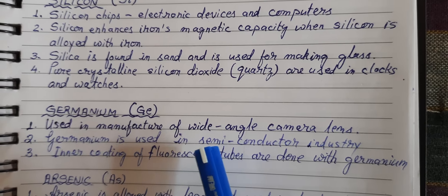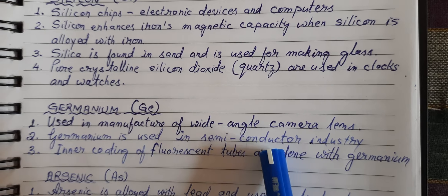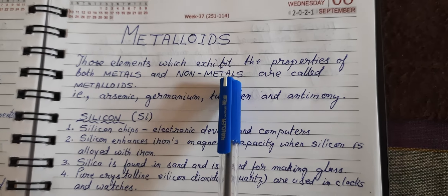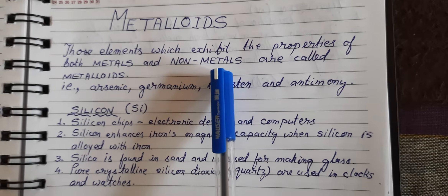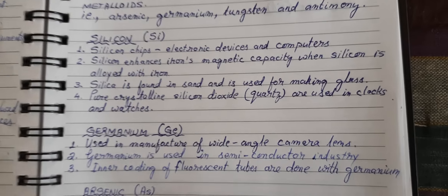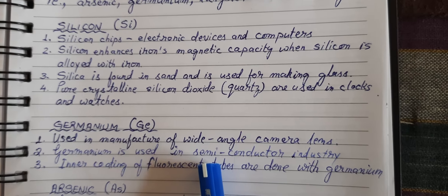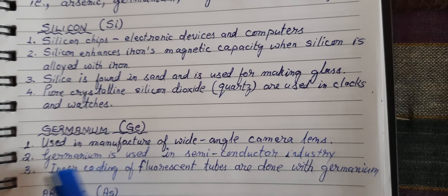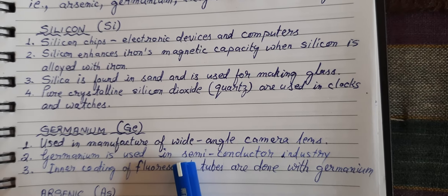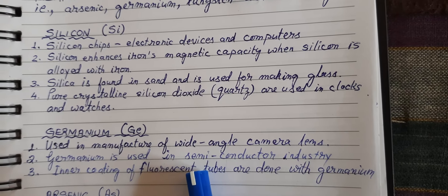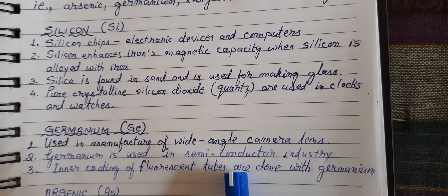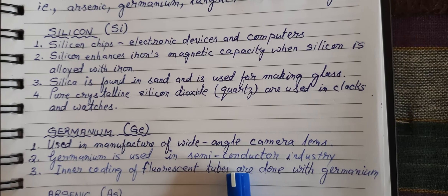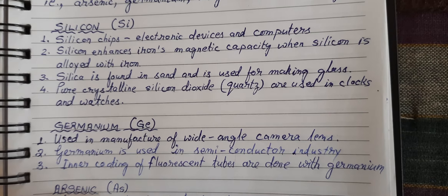Germanium is used in the semiconductor industry. Metalloids are also called semiconductors because some of them have electrical conductivity. Germanium is one such semiconductor. When light falls on semiconductors, that light can be used to generate electricity within them. Germanium is used in the semiconductor industry for this purpose.